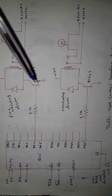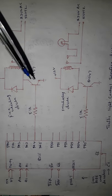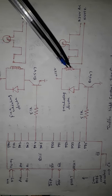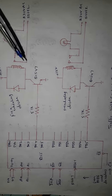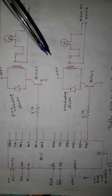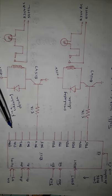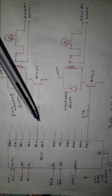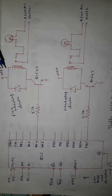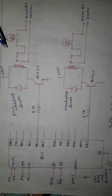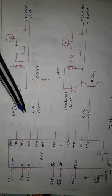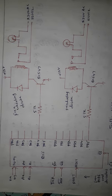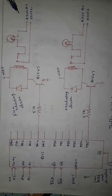In the diagram, only two port pins are shown connected to the traffic lights — one from port A and one from port B — but the rest of the port pins are also connected to traffic lights in the same way.